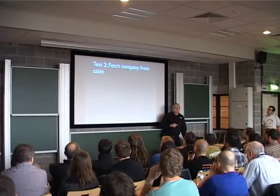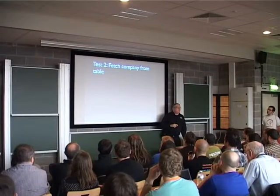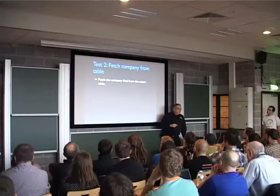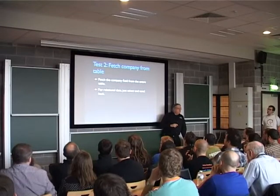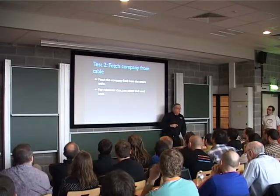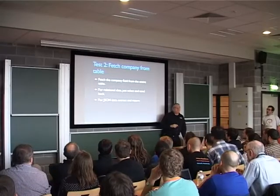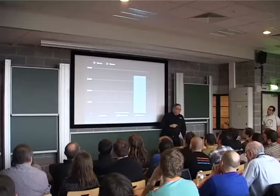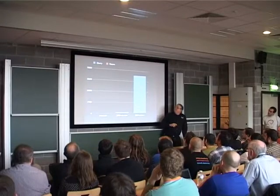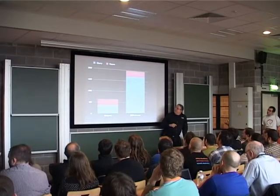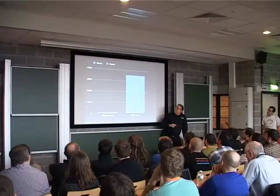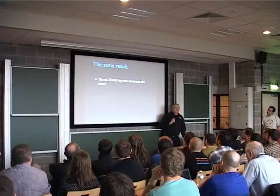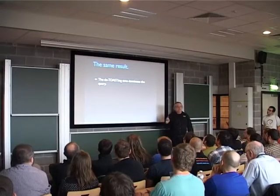Now getting the company field, which is basically like a varchar(40). You fetch the company field from the entire table for the relational data — just select it and send it back. JSON extract and return. The results look pretty familiar — pretty much the same pattern. What we know is de-toasting dominates this. The retrieval time is roughly constant in all cases, and all the variation is in actually producing the result set, not feeding it back.